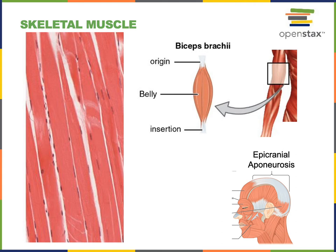For example, the biceps brachii performs the action of flexion at the humeral ulnar joint, commonly known as the elbow joint. The origin of the biceps brachii is on the scapula at the supraglenoid tubercle and the coracoid process. The scapula remains stationary, whereas the insertion of the biceps brachii on the radial tuberosity is what moves during the action of flexion of the glenohumeral joint.